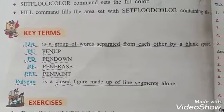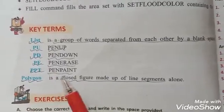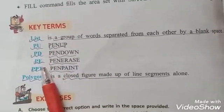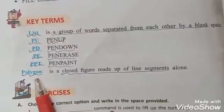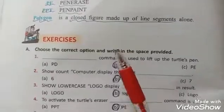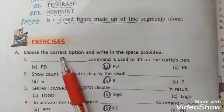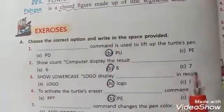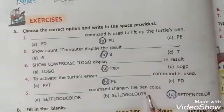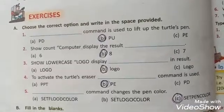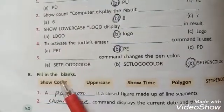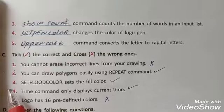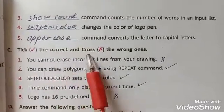Assalamu alaikum, grade 5. Now we are going to start the exercise of chapter number 5. Students will highlight key terms and learn them: list, PU, PD, PE, PPT, polygon. Students will solve this exercise by yourself. Otherwise, tally your solved exercise with this solved exercise. Question A: choose the correct option and write in the space provided. Question B: fill in the blanks. Question C: tick the correct and cross the wrong ones.